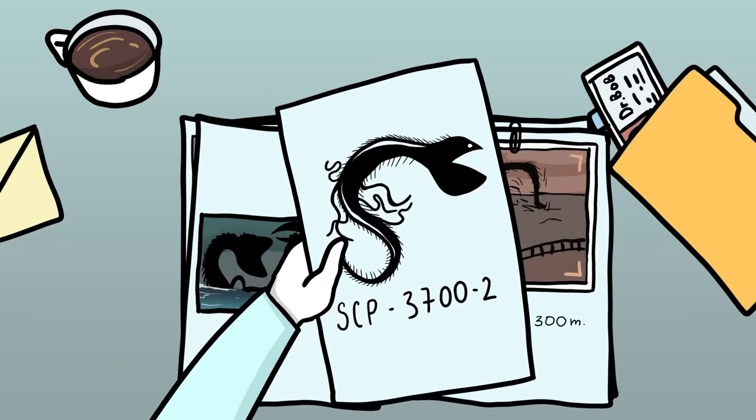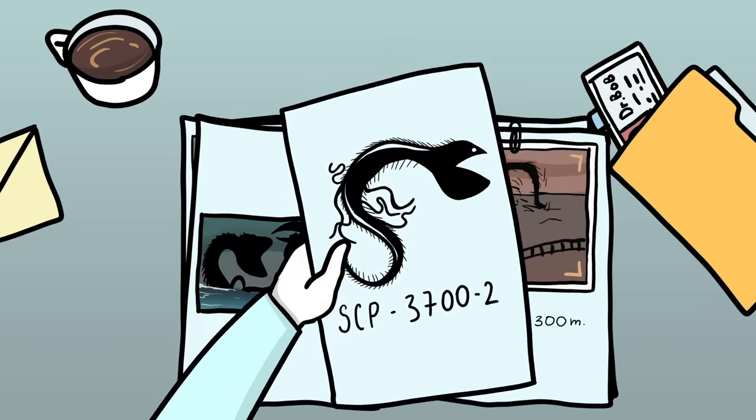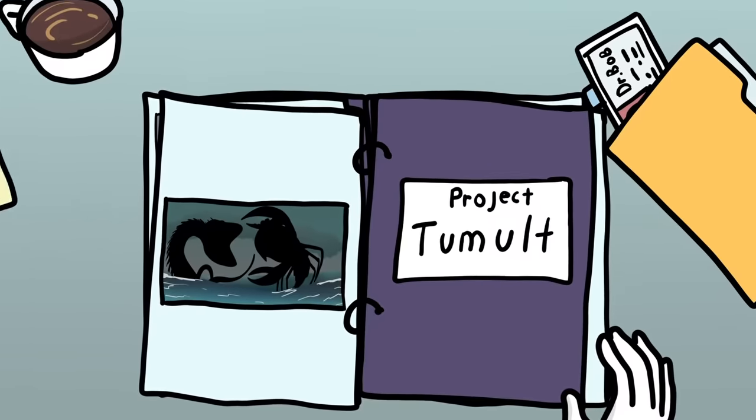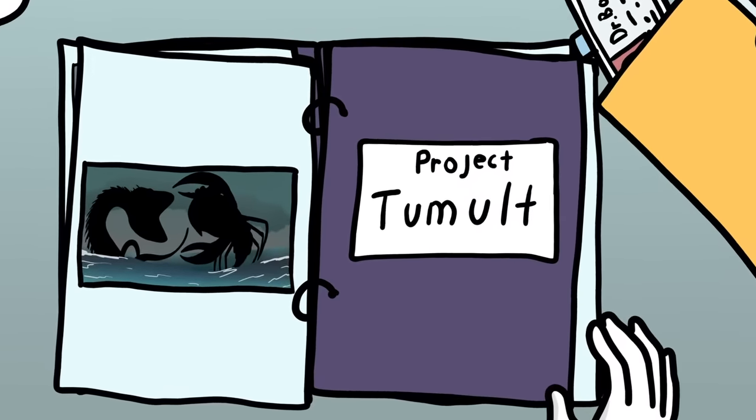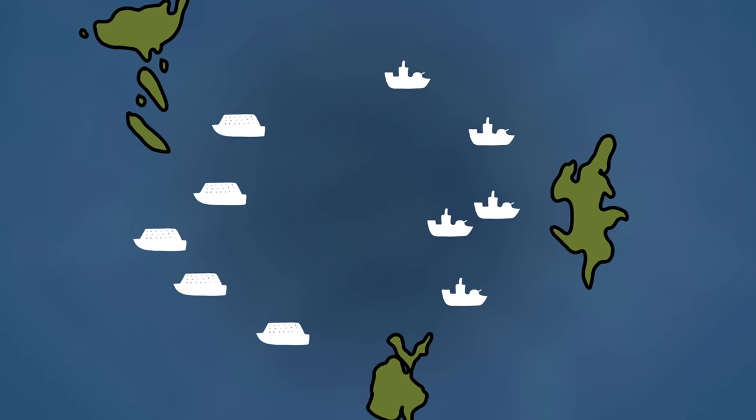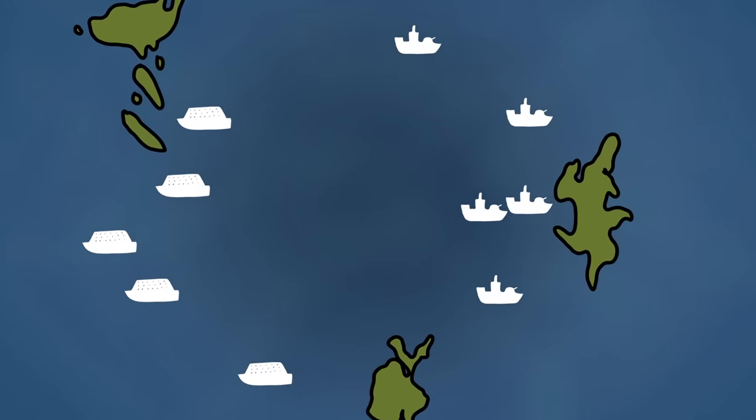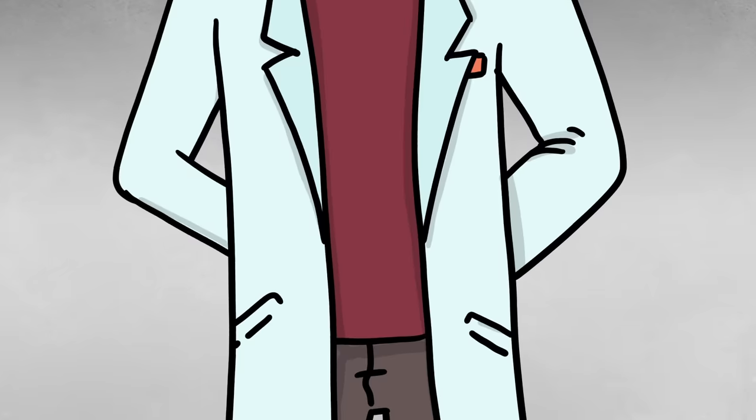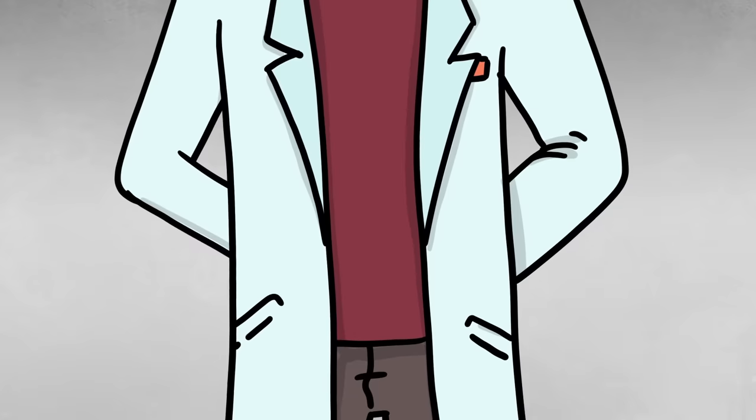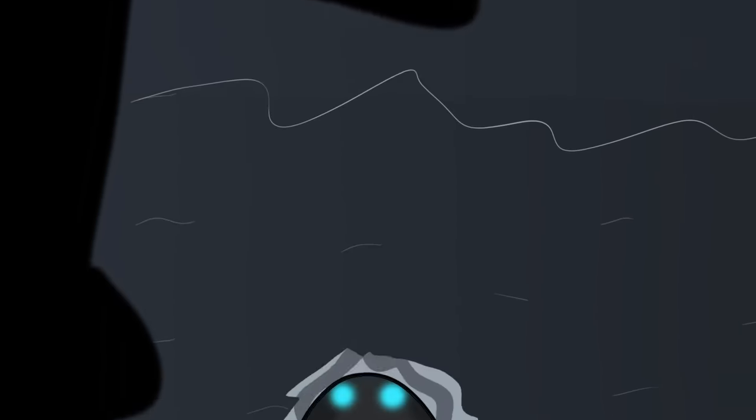Should SCP-3700-2 be successful in defeating 3700-1, then Project Tumult is activated, and the following procedures must take place. First, there is an immediate evacuation of all naval and civilian craft from the 800-kilometer zone. Next, all trade and ferry routes are stopped or rerouted for at least six months, and land-based aquatic defenses are activated. Aerial craft will continue to monitor and engage with 3700-2, while others continue to look for a reappearance of SCP-3700-1.